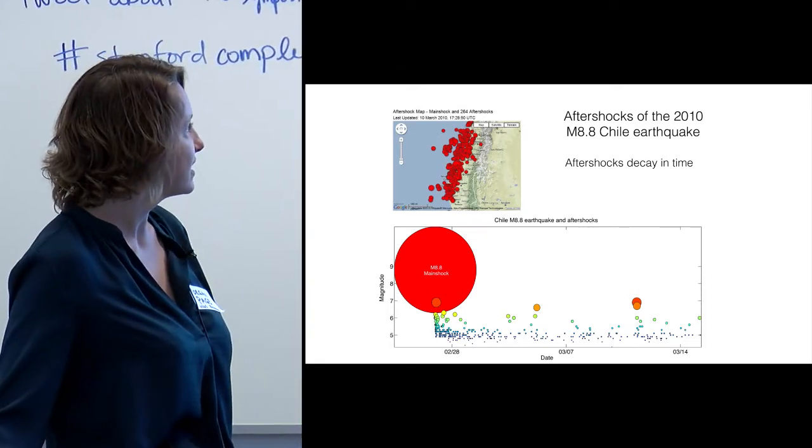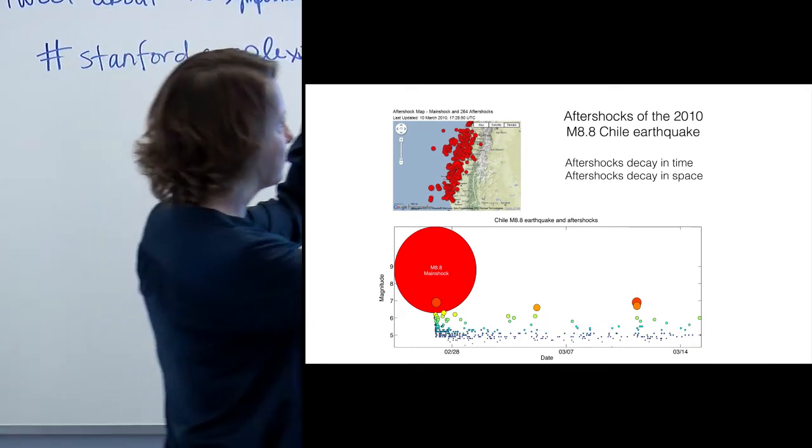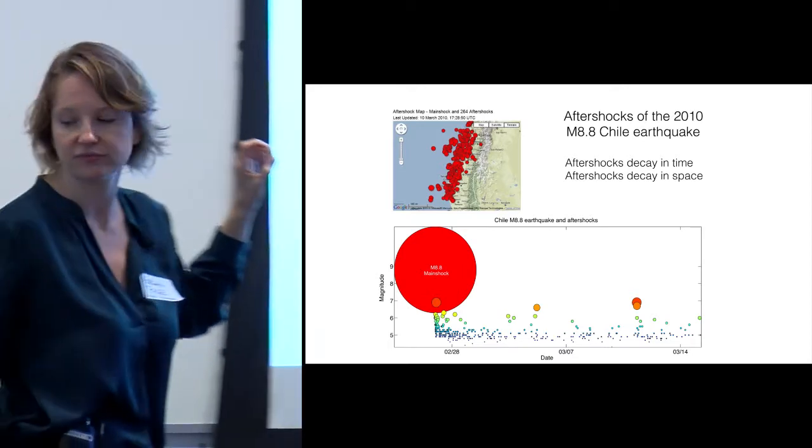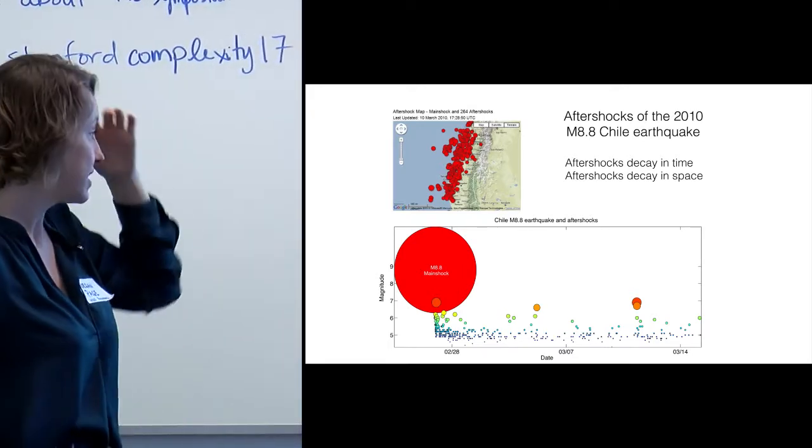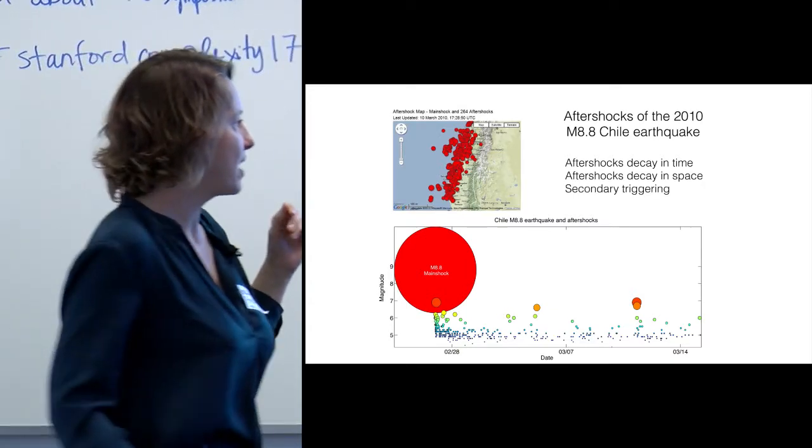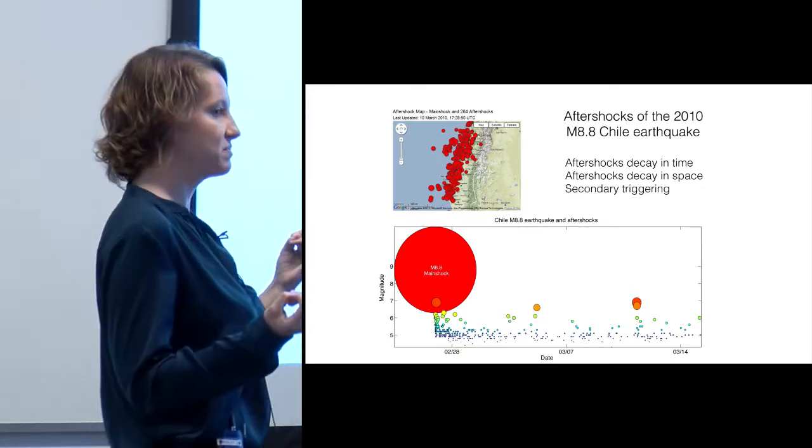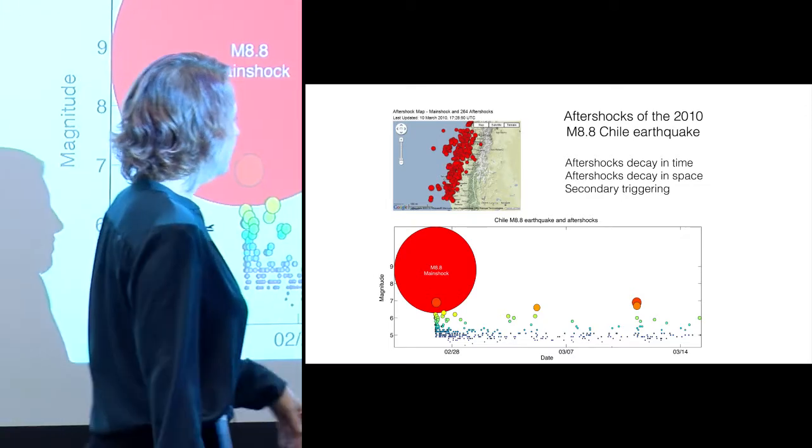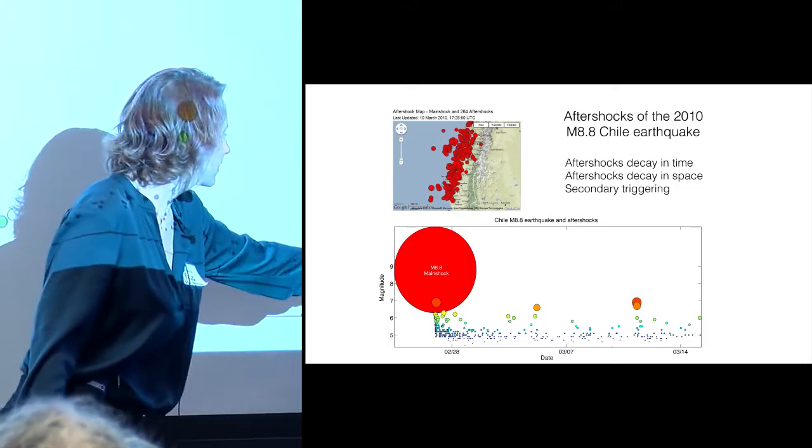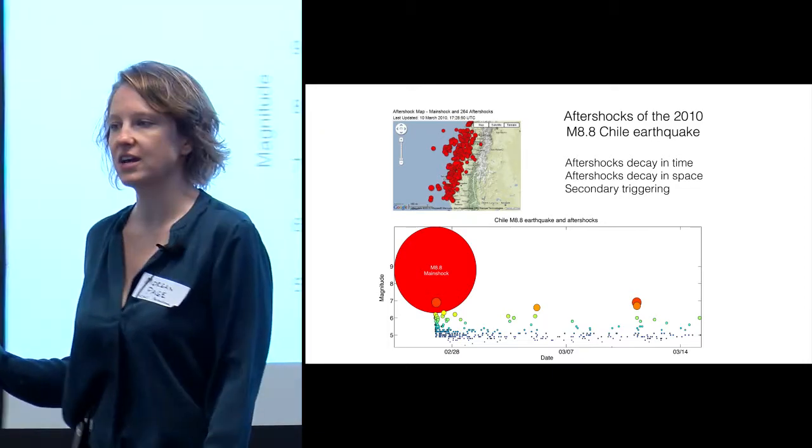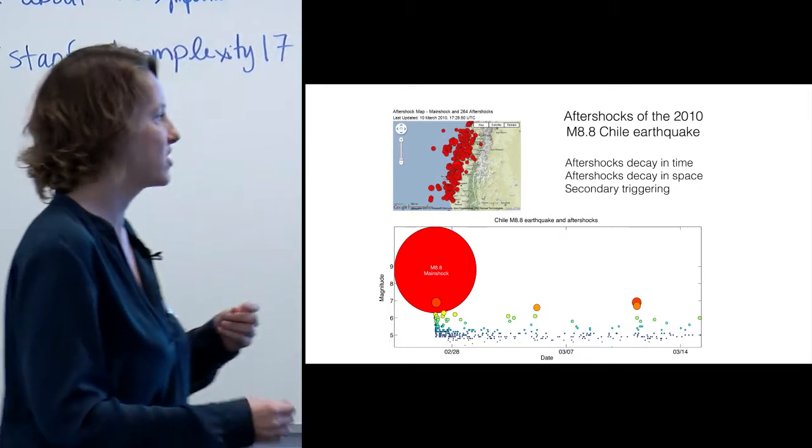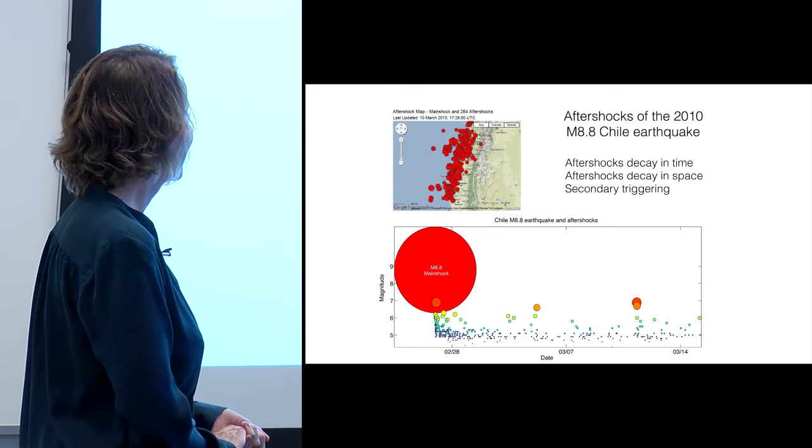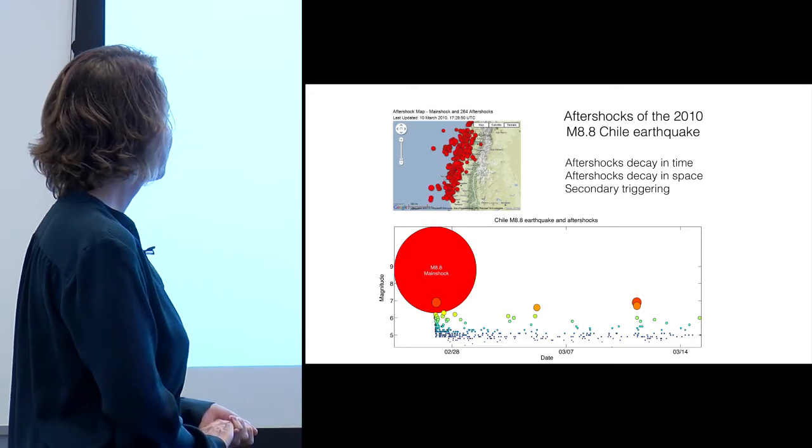You can see just by looking that they decay in space. Right along the fault area that ruptured, you get a very dense amount of aftershocks, but you also get a few that are further away. Secondary triggering you can see on this plot, because all aftershocks can potentially trigger aftershocks, but bigger earthquakes trigger more. Whenever there's a particularly large aftershock in the sequence, those in turn will trigger aftershocks, and you get a brief pickup in the aftershock rate.